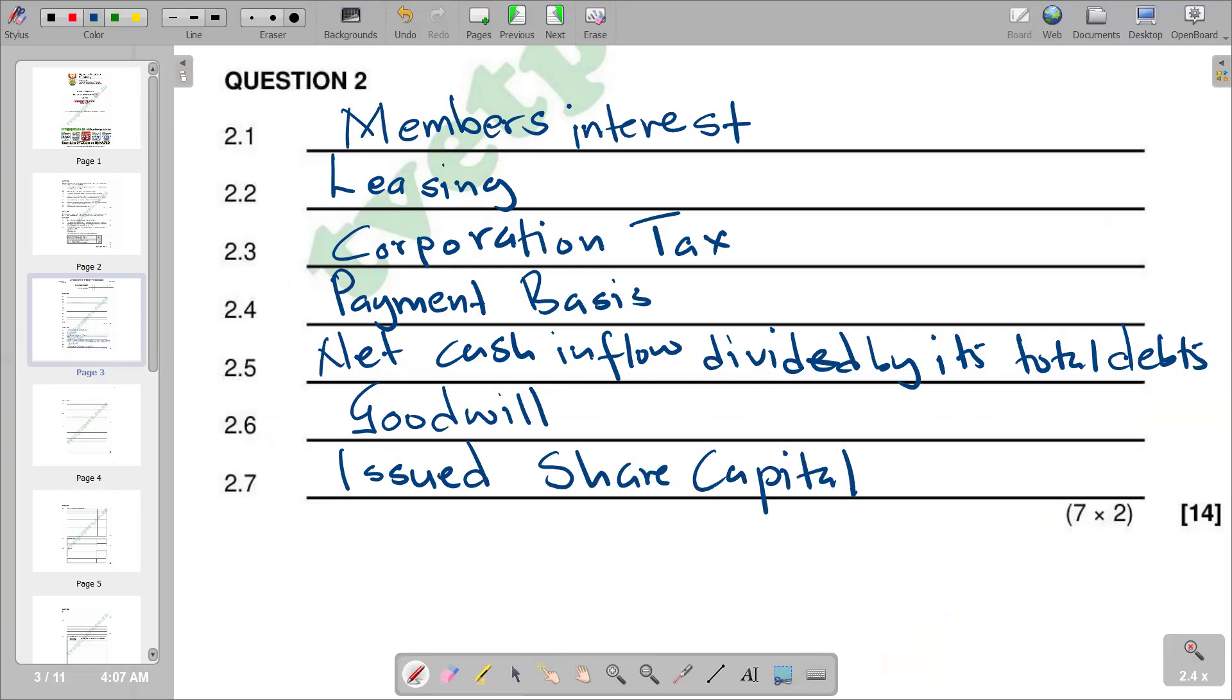This is what we have for question 2 of the question paper of November 2024. This question covers company and close cooperation concepts. Thank you for listening and hopefully the video was helpful. Please take note: more typical examination questions will be uploaded on this channel. Let's stay tuned and go to the next video. Thank you.